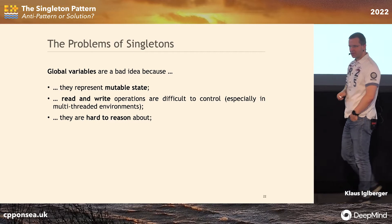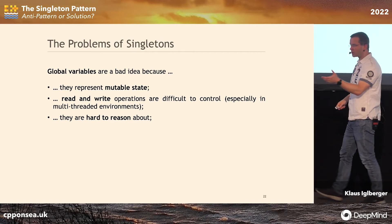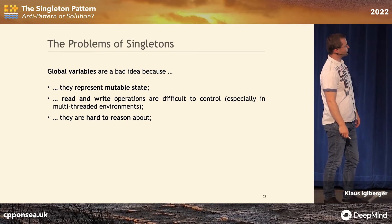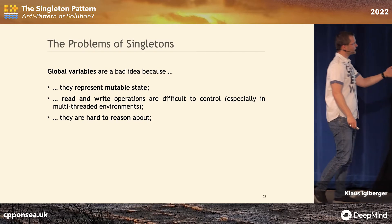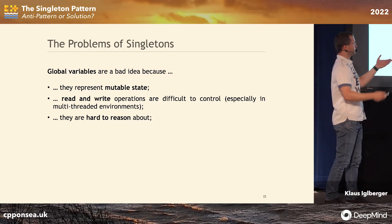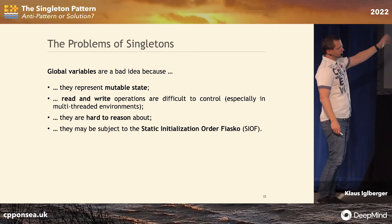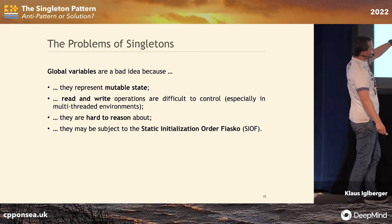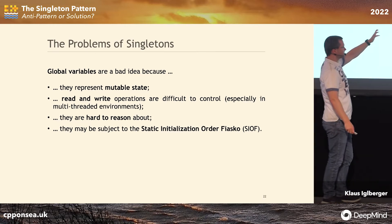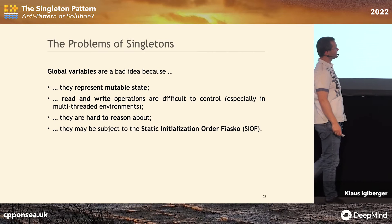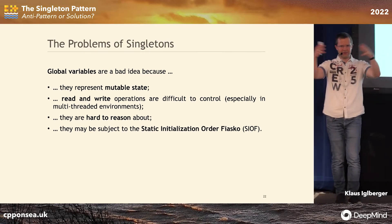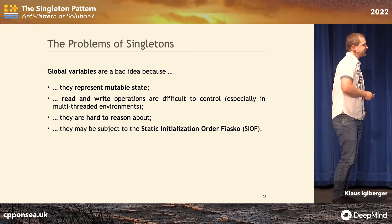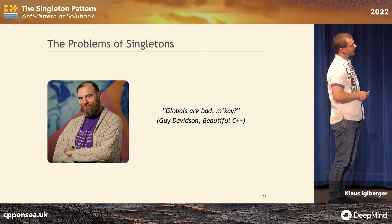Global variables are a bad idea for a couple of reasons. They represent a mutable state on a global level, meaning anybody can read and write at any point in your program. It is super difficult, if not impossible, to control these accesses. This is especially hurtful in a multi-threaded environment — usually the reason why it is considered to be an anti-pattern. They are also very hard to reason about. If you cannot reason about whether your program is correct, it's hard. There are also problems with initialization — depending on how you do things, you might run into the so-called static initialization order fiasco.